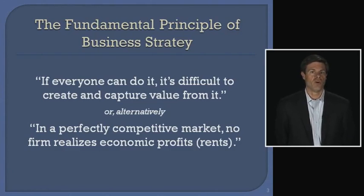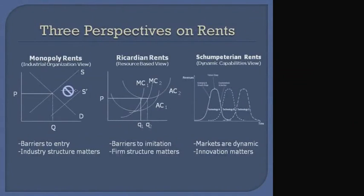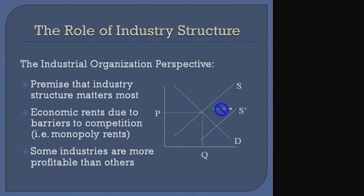In a perfectly competitive market, no firm realizes economic profits or rents. But how do we analyze whether an industry is in a perfectly competitive market or not? You might recall from our last session that we talked about three different perspectives on when economic rents exist: the idea of a monopoly rent from the industrial organization view; Ricardian rents, the idea that there are barriers to imitation; and Schumpeterian rents, which relate to the dynamic capabilities of firms over time. Today, we're going to specialize and look in detail at this idea of monopoly rents, and in particular, the role of industry structure.